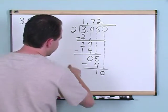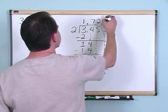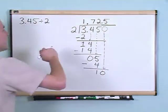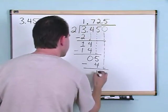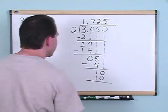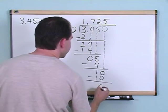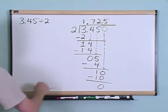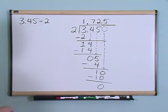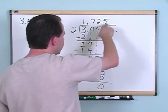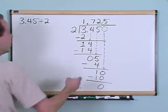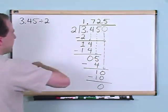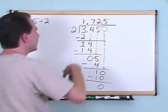And we ask ourselves, can 2 be divided into 10? The answer is yes, it can go 5 times. 5 times 2 gives you 10. And 10 minus 10 gives you 0. And since you have nothing else left down here and you have no more digits up here and nothing more to drag down, you're done. You've filled out as many digits as you can. The answer is 1.725.